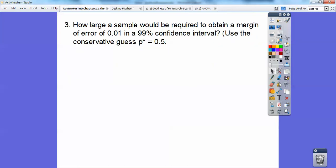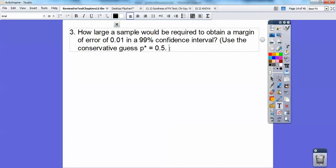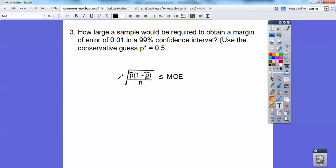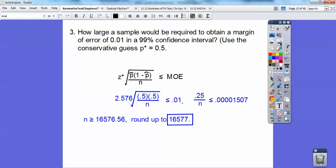So how large a sample would be required to obtain a margin of error 0.01 in a 99% confidence interval? And we're going to use the conservative guess, P star equaling 0.5. So here's my formula right here, Z star times square root of P hat, 1 minus P hat divided by N. And we're going to let that be less than or equal to the margin of error. My 99% confidence interval, so 2.576 goes here. 0.5 goes here, 0.5 goes here. And we're solving for N. I'm going to divide both sides by 2.576. I get N is greater than 16,576 with some change. So always round up, 16,577.